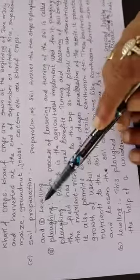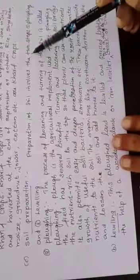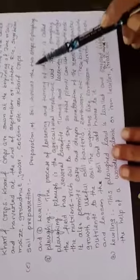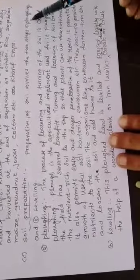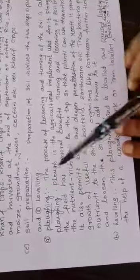Next one is soil preparation. Kheti ke liye soil ko prepare karna hai. Preparation of soil involves two steps. Soil ko preparation do steps mein bataya. Number one is ploughing and number two is leveling.